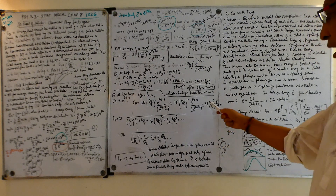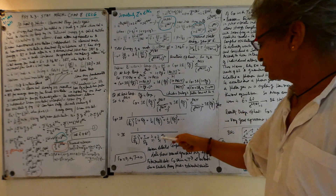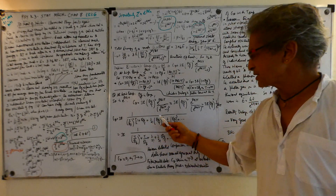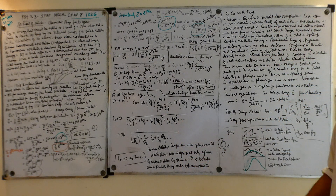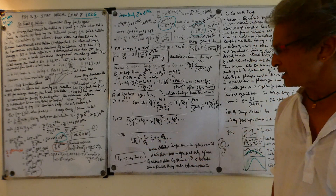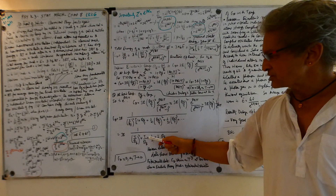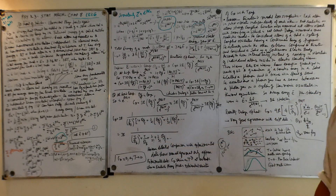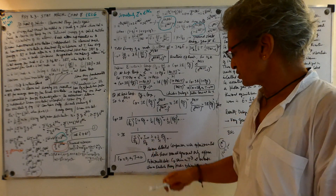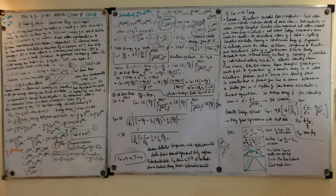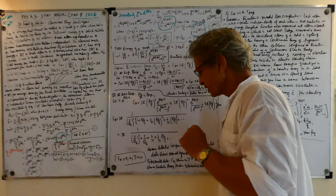I rewrote the prefactor as (T/θ_E)² in the denominator and expanded the exponential: e^(θ_E/T) = 1 + θ_E/T + (1/2!)(θ_E/T)² + (1/3!)(θ_E/T)³ + ... Multiplying through gives (T/θ_E)² + T/θ_E × 1/2! + (1/3!)(θ_E/T) + ... As T goes to zero, every term in this expansion goes to zero, so C_v tends to zero.